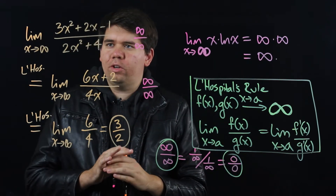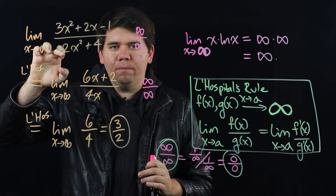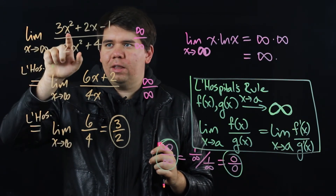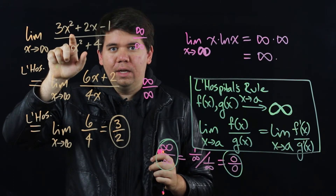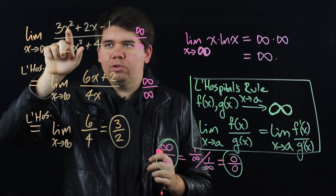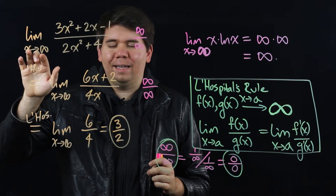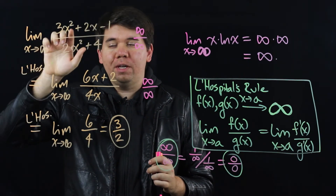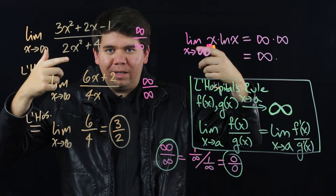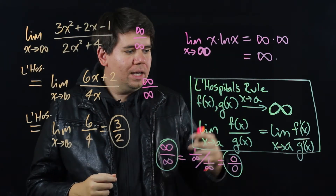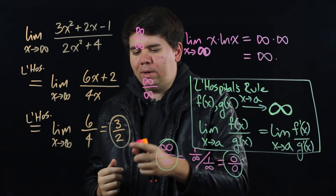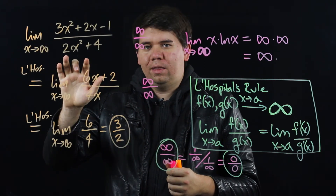Why 3 halves? If you think back to the original function, both the top and bottom were growing arbitrarily large, but the top was growing faster — not just at the rate of x squared, but at the rate of 3 times x squared. So the top was growing 3 over 2 times as quickly as the bottom. For example, plugging in 1000, the top would be around 3 million while the bottom is only at 2 million. L'Hôpital's rule gives us a way to continually take derivatives until we reach a determinate form that tells us what the limit is.